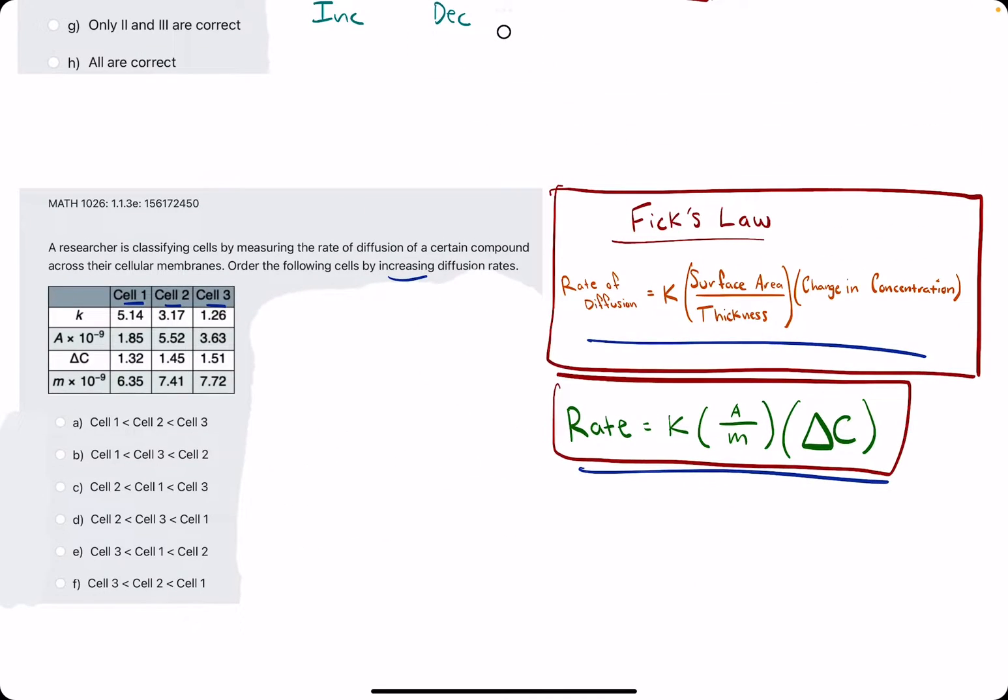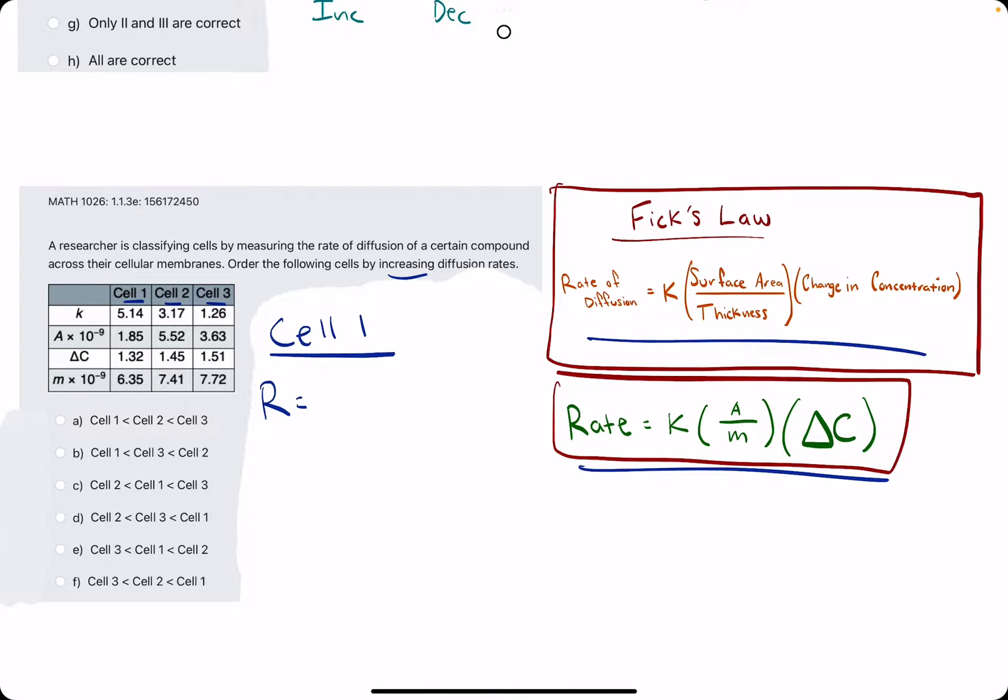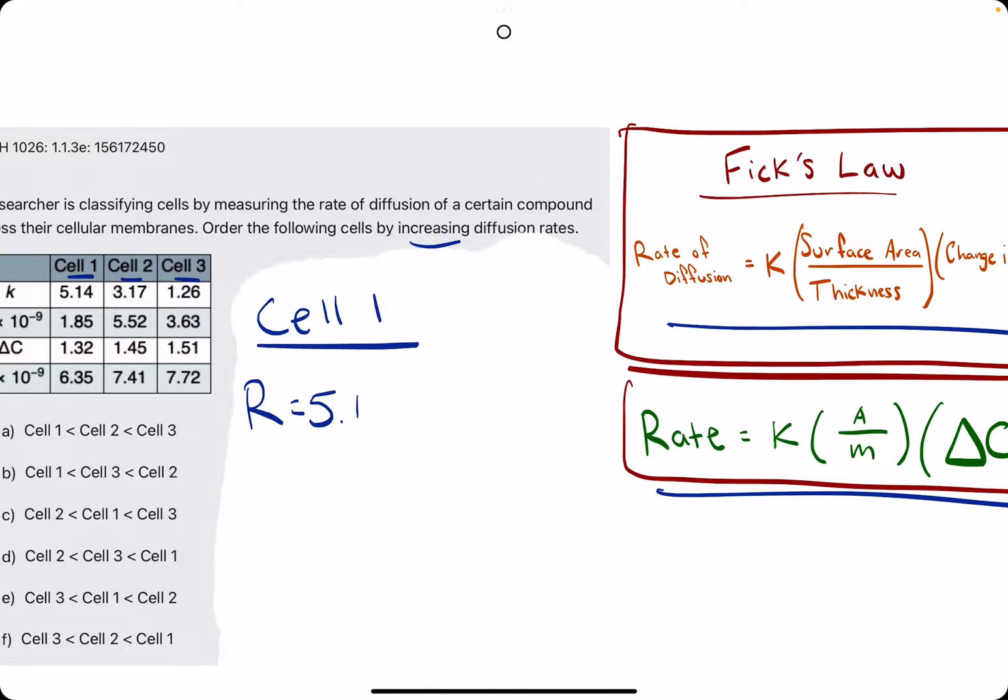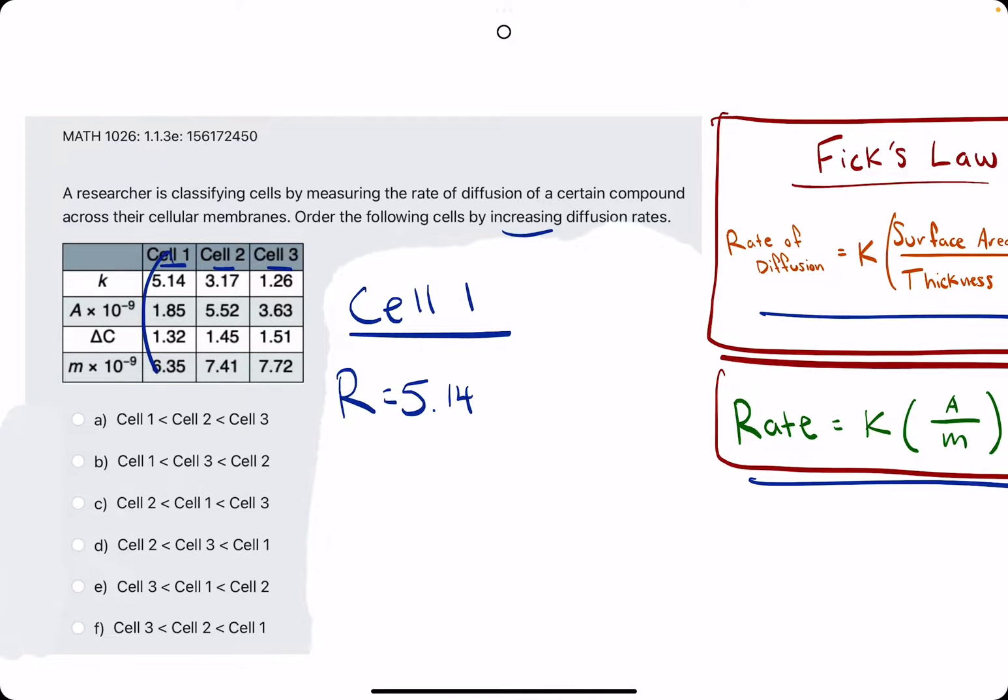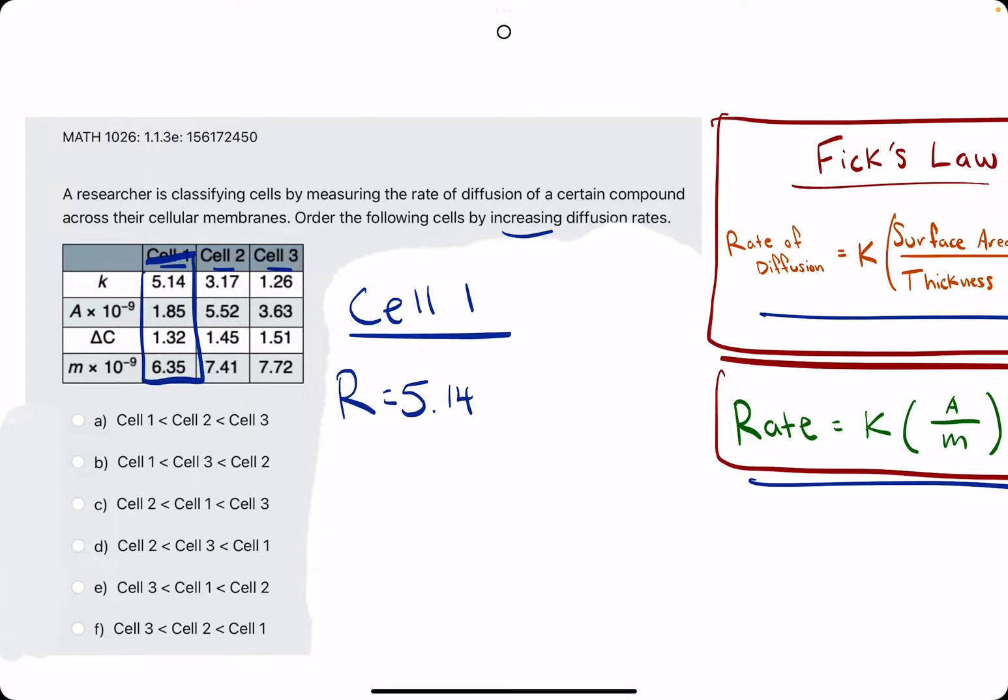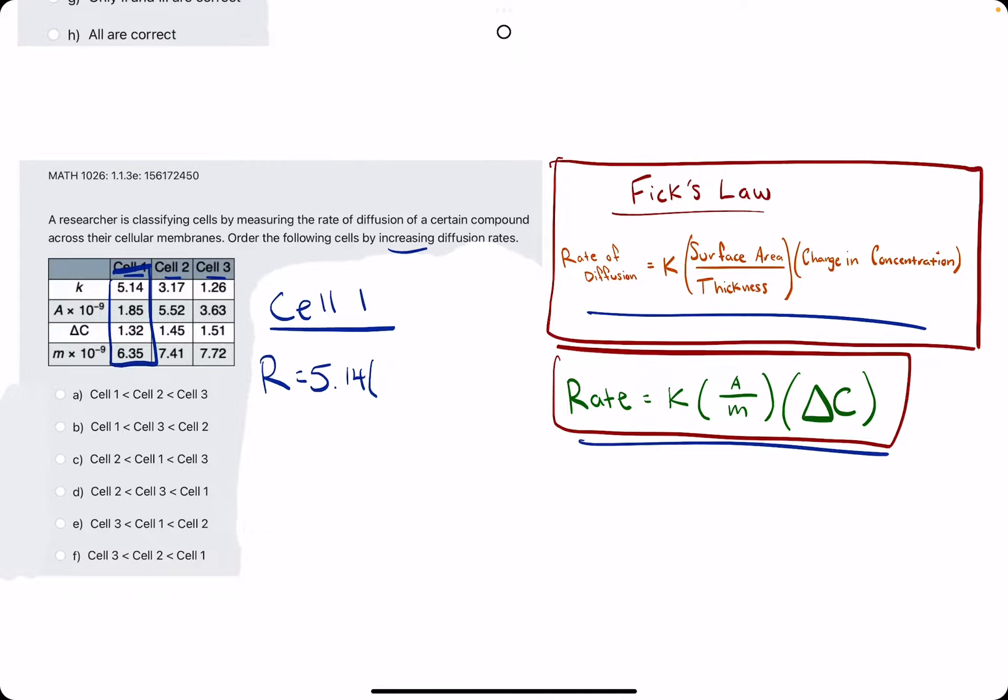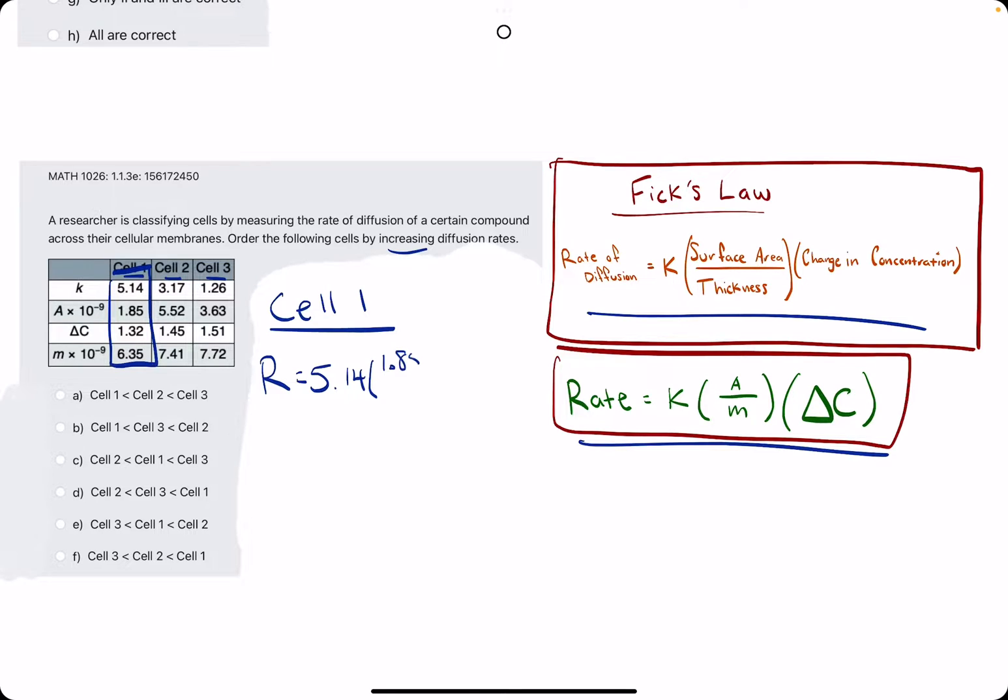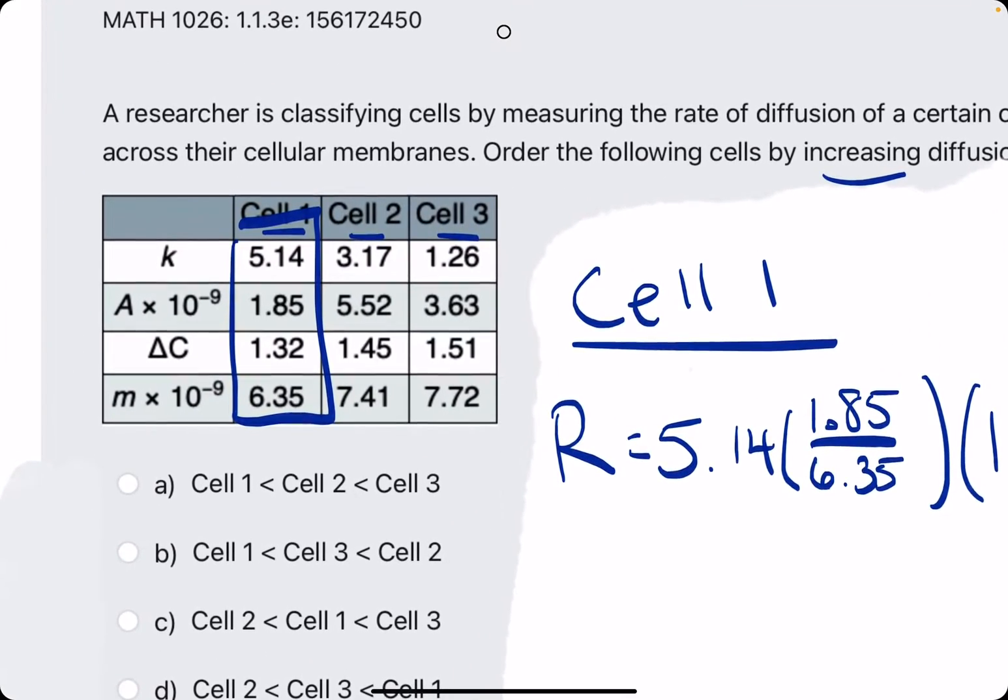Let's get started. For Cell 1 we are finding the rate, so we have K is 5.14. Again, we are using Cell 1's values here in this first column, so 5.14 times A which is 1.85 divided by m which is 6.35, and then all times delta C which is 1.32.